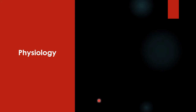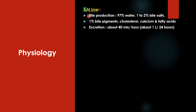The physiology of the gallbladder and bile ducts: bile is produced in the liver. Bile constitutes 97% water, 1–2% bile salts, 1% bile pigments, cholesterol, calcium, and fatty acids. It is excreted at around 40 ml per hour, which works out to approximately 1 liter in 24 hours.